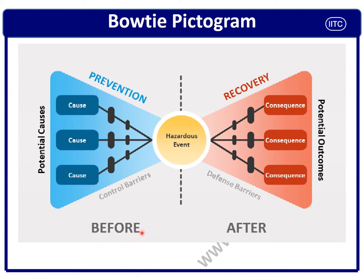This is why the left side is called 'before accident.' On the right side, these are recovery barriers or recovery measures. We need to identify all possible consequences of an accident, then identify the recovery barriers, then identify potential escalation, and then identify control measures for recovery or damage control. We will cover threat identification, barrier identification, escalation, and control measures on the preventive side in the following slides.